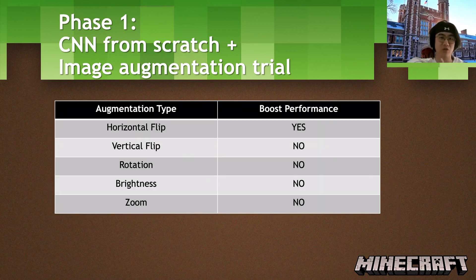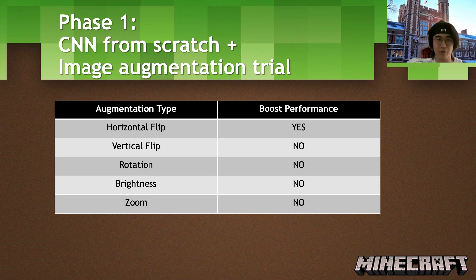During the image augmentation trial, I tried common augmentation strategies such as horizontal flip, vertical flip, rotation, brightening, and zooming. From my experiments, only horizontal flip boosted the model. Data augmentation has a side benefit — it helps fight overfitting because you can feed the neural network with images from different perspectives. So I used horizontal flip as the only image augmentation in phase one.